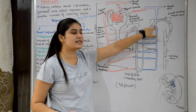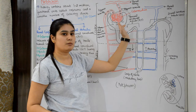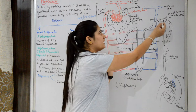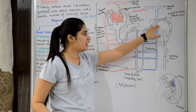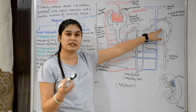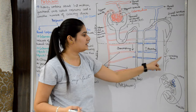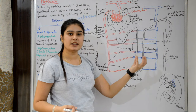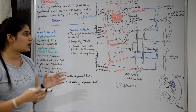After the loop of Henle, the next segment is the distal convoluted tubule (DCT), which is the most distal part of the nephron. The DCT connects to the collecting duct, which collects urine. This is the complete structure of the nephron.